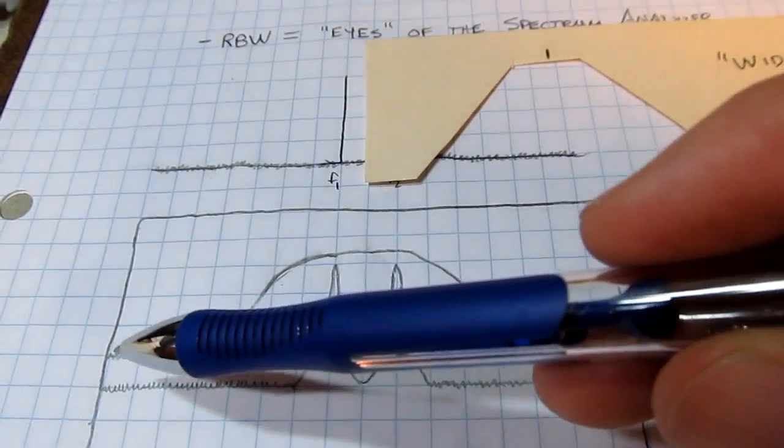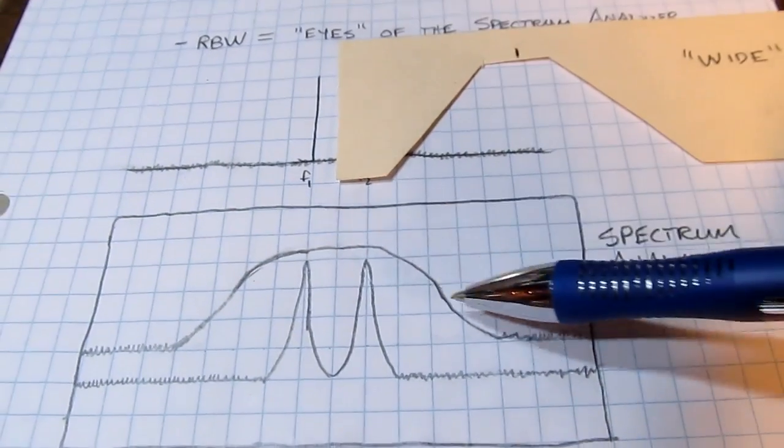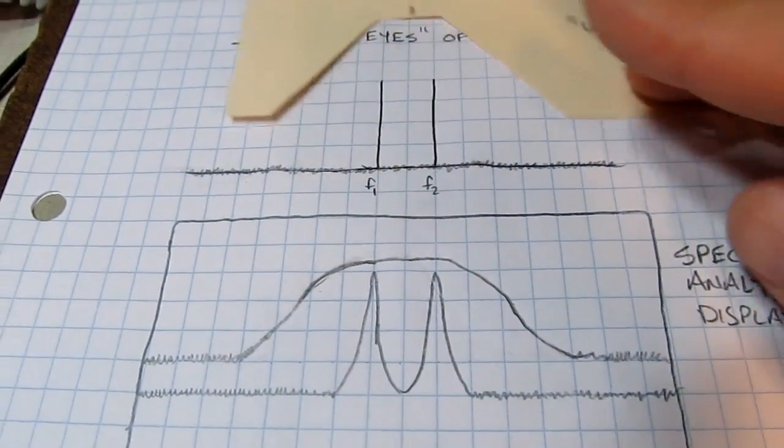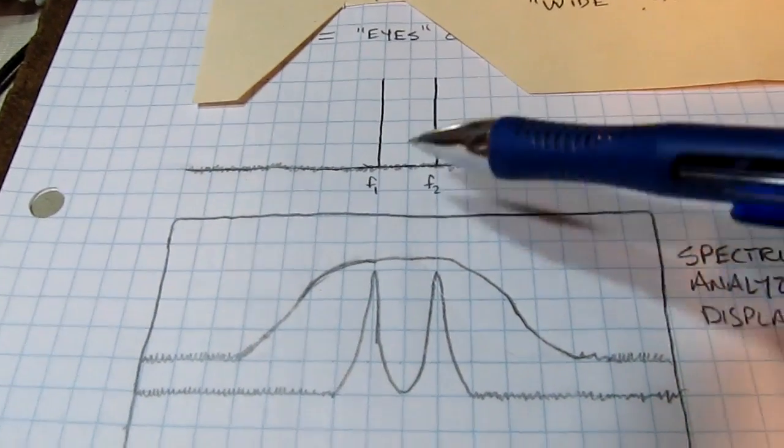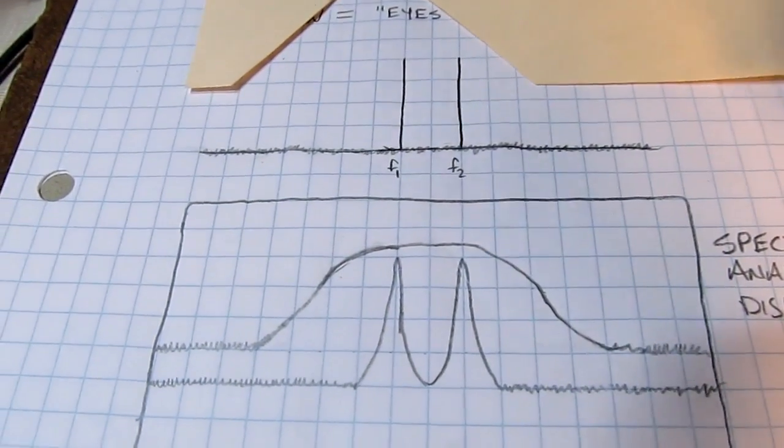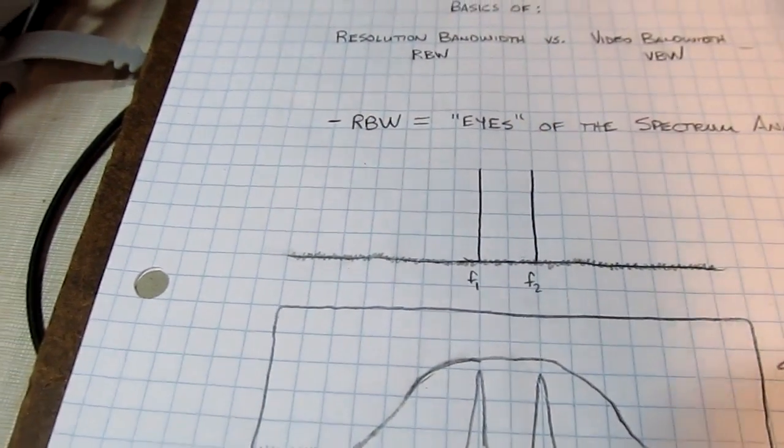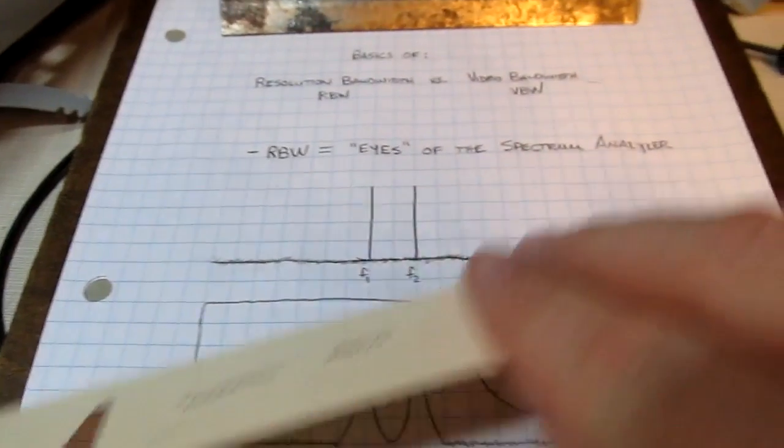So the spectrum analyzer display has plotted out essentially a trace that looks like that. And the fact that you have two separate signals in here is kind of invisible to you on the spectrum analyzer display with the wide resolution bandwidth filter.